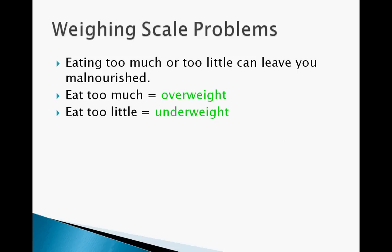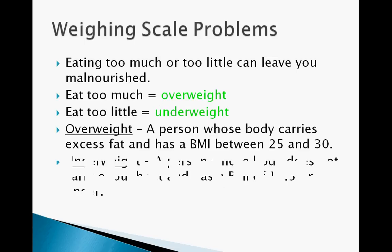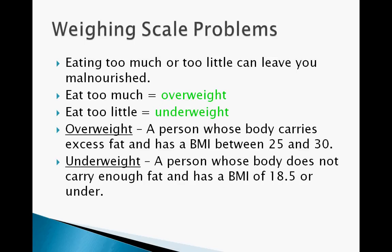Here are the two definitions for the key terms. Overweight: a person whose body carries excess fat and has a BMI between 25 and 30. Underweight: a person whose body does not carry enough fat and has a BMI of 18.5 or under.